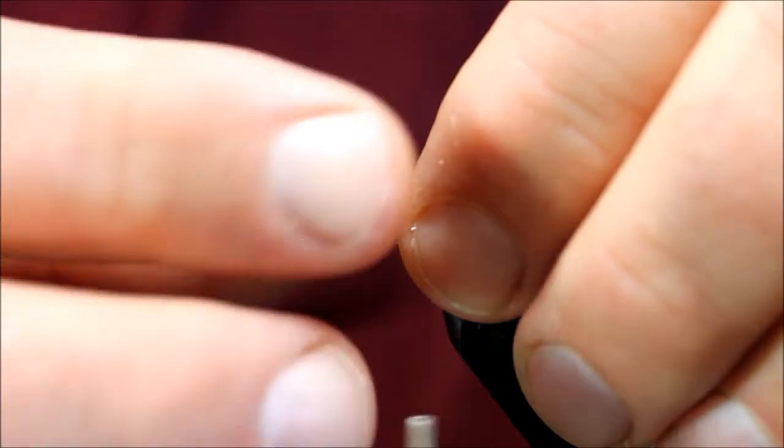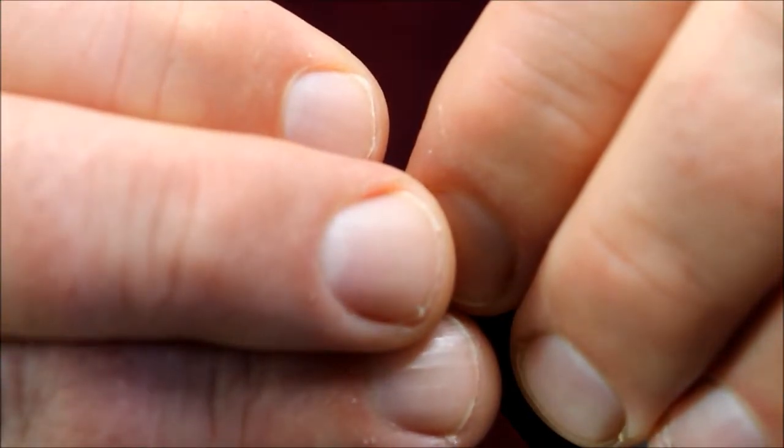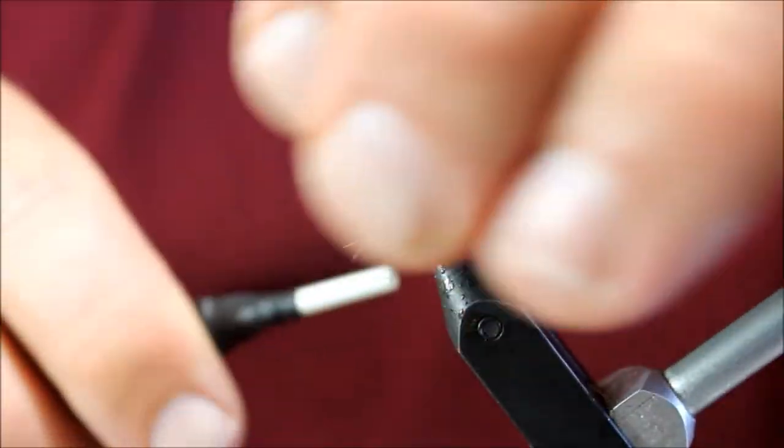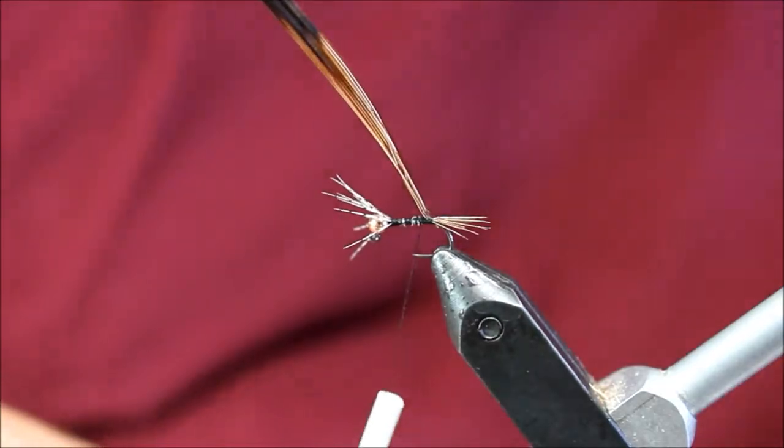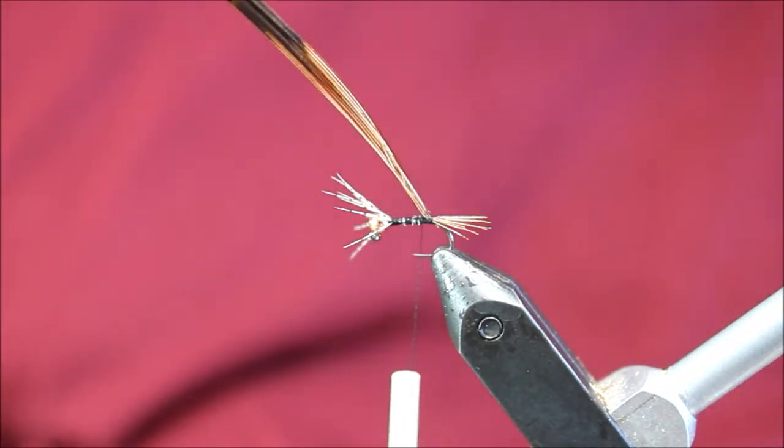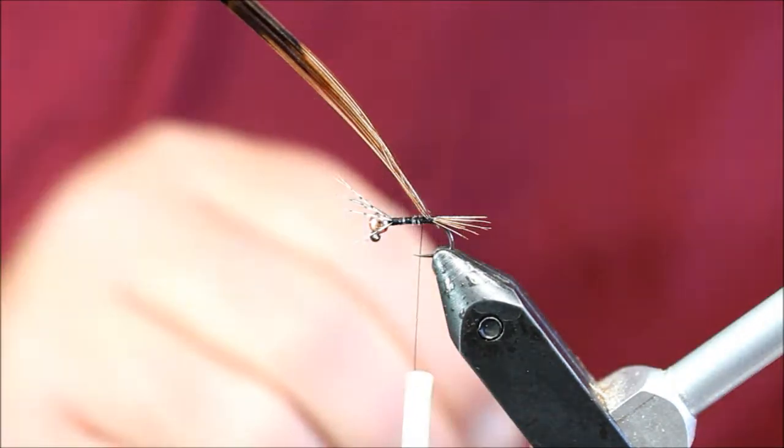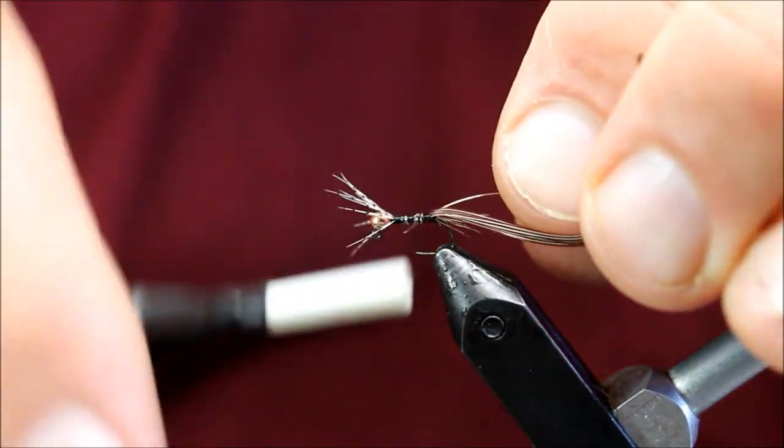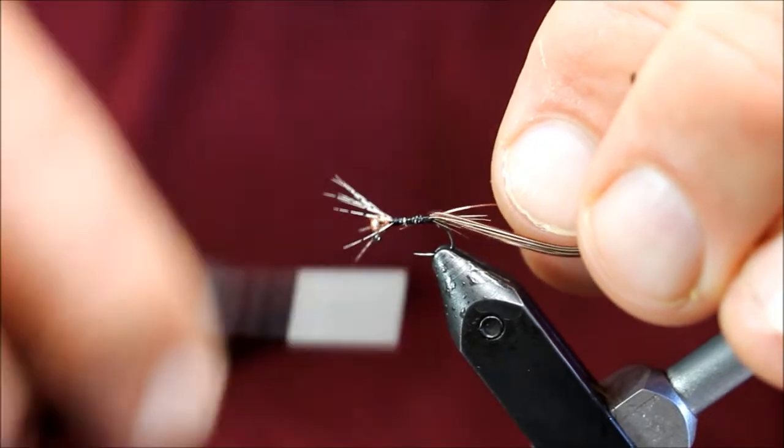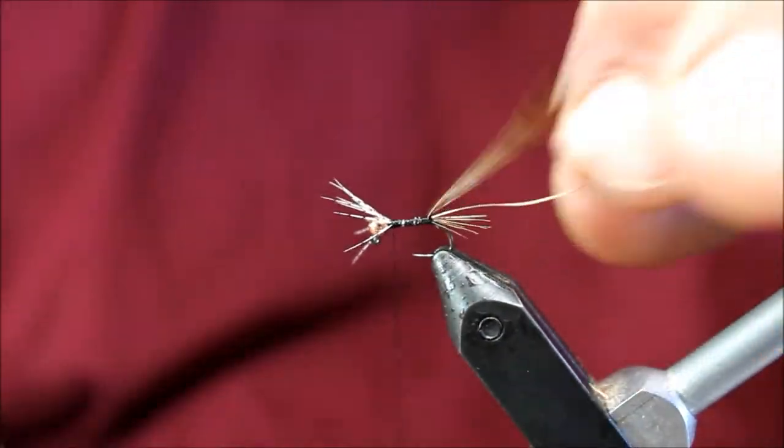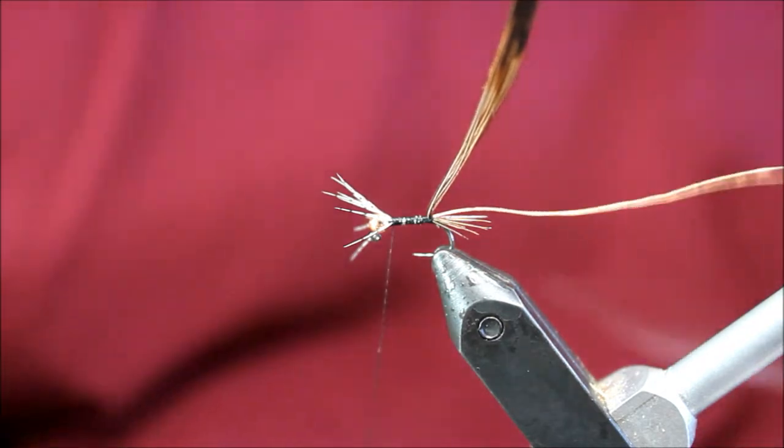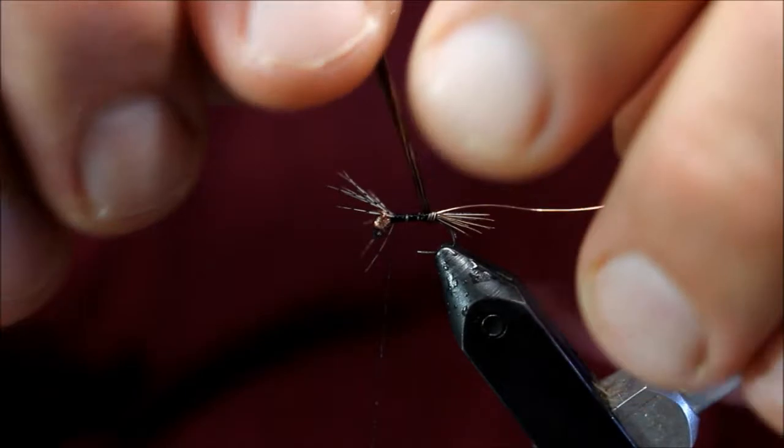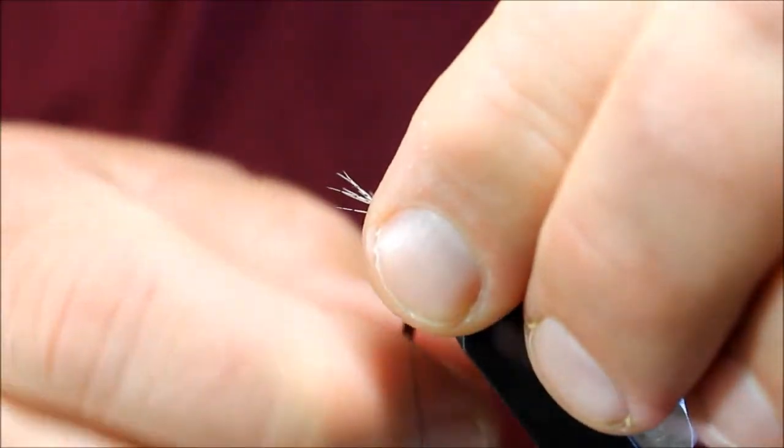Tie in front a couple times and then grab some small copper wire here, again tying that in on the far side and wrap forward to right behind our hackle feather. Take my pheasant tail fibers first wrapping forward.